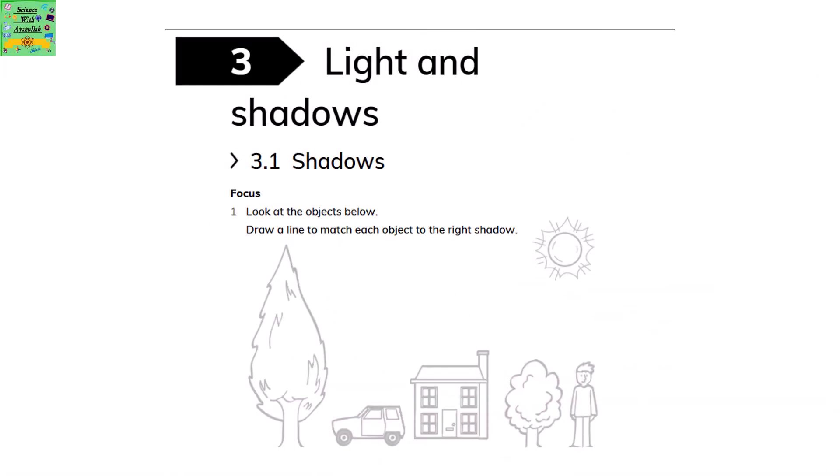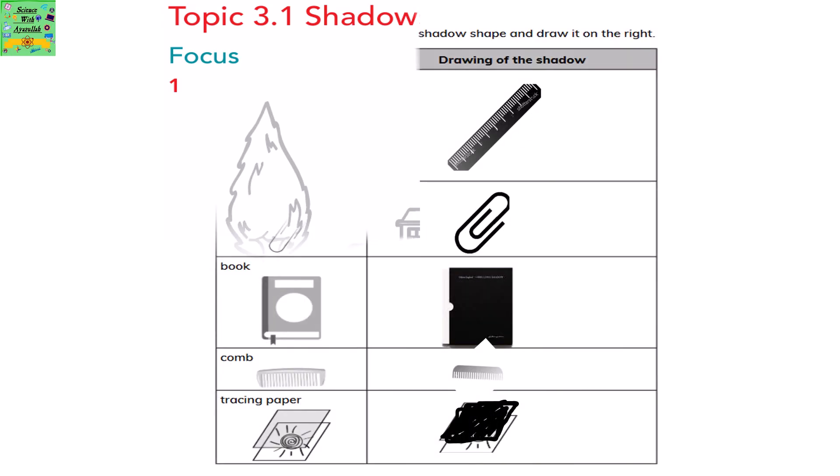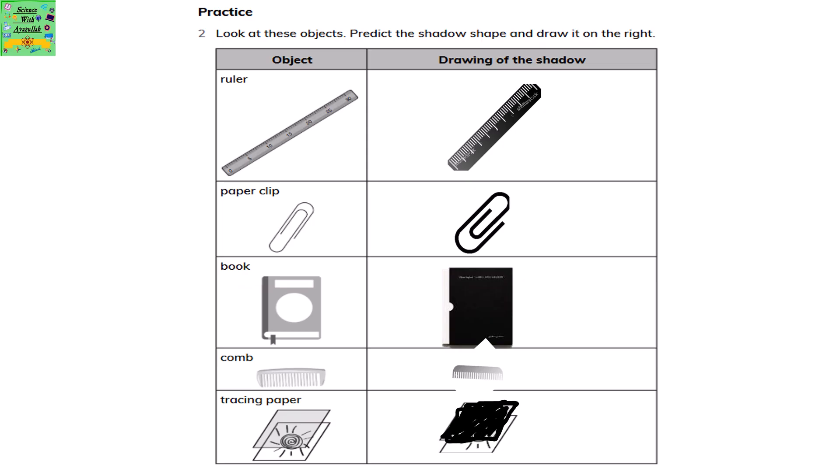Light and Shadows. Look at the object below. Draw a line to match each object to the right shadow. Each of the object's shadows have been marked. Look at these objects. Predict the shadow shape and draw it on the right side.